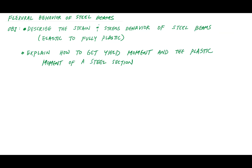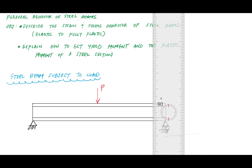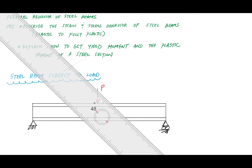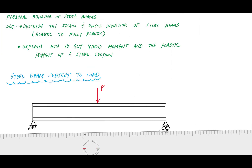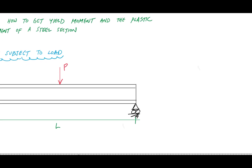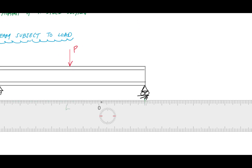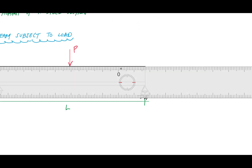To get us started, we're going to look at a loaded steel beam. I've got this beam — an I-shaped beam or a wide flange section. It's loaded at mid-span with a force P and has a length L. The cross section is a wide flange shape, meaning it looks like an I.